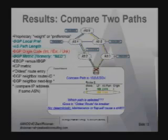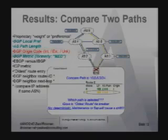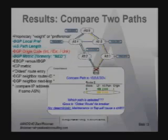So it happened to be, if you brought up the session to AS2 first, that becomes the active path. Then you bring up the session to AS3. What ends up happening is in most routers, they'll come in and say, well, I have an equal cost route. There's no compelling reason to select this. I'm not going to bother rewriting or updating my RIB or my FIB because I already have an active route, and this is not superior in any way.